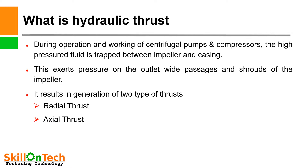What is hydraulic thrust? During operation and working of centrifugal pumps and compressors, the high pressure fluid trapped between the impeller and casing exerts pressure on the outlet wide passage and shrouds of the impeller, resulting in generation of two thrusts. One is radial thrust and the other is axial thrust. Radial thrust is produced due to unbalance of hydraulic forces in the radial direction of the impeller, and axial thrust is produced in the impeller of pumps and compressors parallel to the rotor.